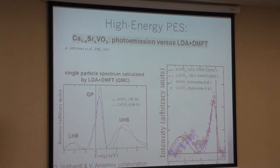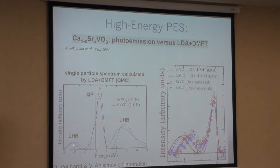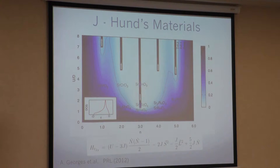One of the first calculations, from Dieter Vollhardt and Anisimov, chose vanadite because there is a nice experiment. The theoretical spectrum shows the strip extraction as well, and photoemission measures only the occupied part. Putting the spectral function together with photoemission gives quite nice agreement. This was a big progress in understanding correlated materials.